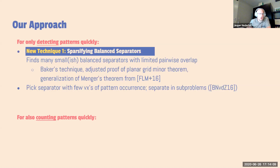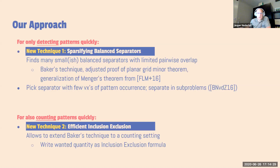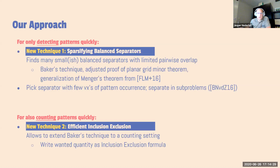For counting patterns quickly, you need another method: efficient inclusion-exclusion. Even Baker's technique is not easy to extend to a counting version. The idea is to set up an inclusion-exclusion formula giving the exact count, but it turns out it has as many as 2 to the K elements where K is the number of vertices in the pattern. However, we can shrink this to an inclusion-exclusion formula using only K-squared elements, because these elements are really dependent on the solution in some structured way. That's all. Thanks for your attention.